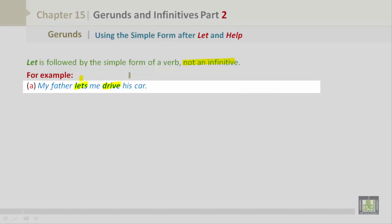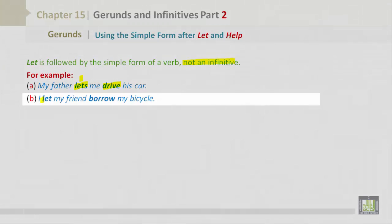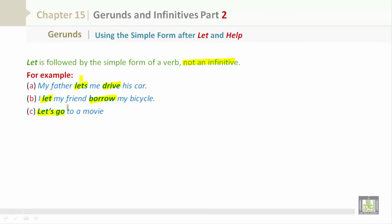Using the simple form after let and help. Let is followed by the simple form of a verb, not an infinitive. For example, my father lets me drive his car. I let my friend borrow my bicycle. Let's go to a movie. Incorrect: My father lets me to drive his car.